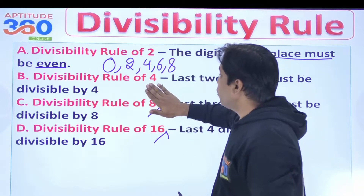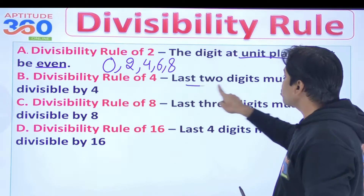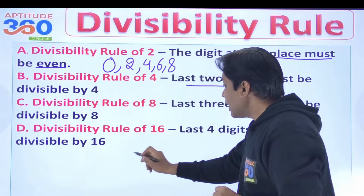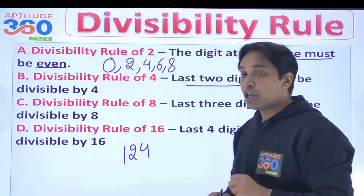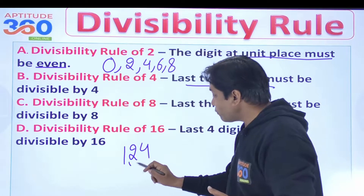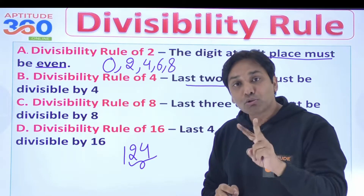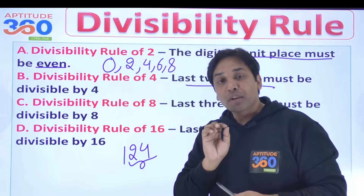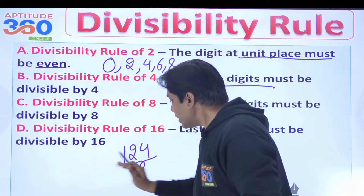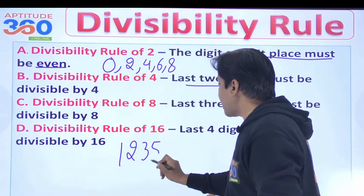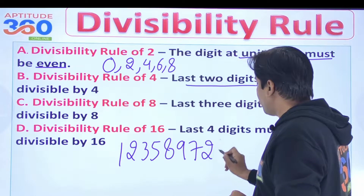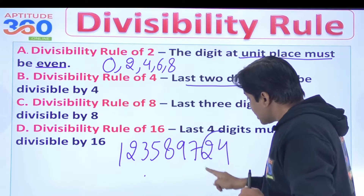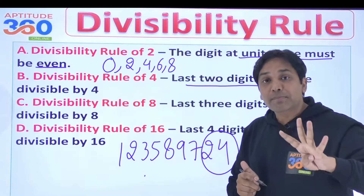What is the divisibility rule of 4? The last 2 digits must be divisible by 4. It does not matter how big the number is. Say you have 124 — is 124 divisible by 4? I look at the last 2 digits: is 24 divisible by 4? Yes, and hence 124 is also divisible by 4. Even if you have a very huge number like 1,2,3,5,8,9,7,2,4, my focus is on the last 2 digits.